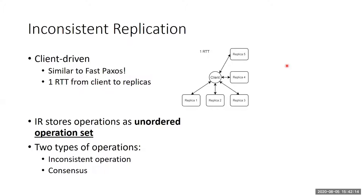Unlike Paxos, which maintains a log of all operations or commands, inconsistent replication (IR) stores all operations as an unordered operation set — essentially a bag of operations with no ordering whatsoever. The protocol supports two types of operations: one is called the inconsistent operation, and the second is the consensus operation.